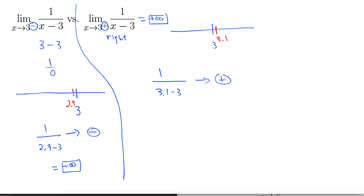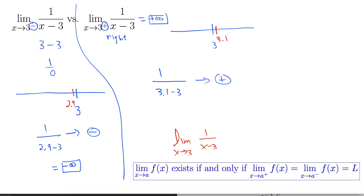Now, technically both of these one-sided limits do not exist, because by our definition a limit needs to be a real number, and infinity is not a real number. But it's not useful to write 'does not exist' for these, so we write positive and negative infinity. However, 'does not exist' is still useful as an answer for the two-sided limit as x goes to 3 of 1 over x minus 3. Remember, a limit exists at a if and only if the right-sided and left-sided limits are equal. Here they are not equal — one is negative infinity and one is positive infinity. Thus the limit as x goes to 3 does not exist, which we abbreviate as DNE.